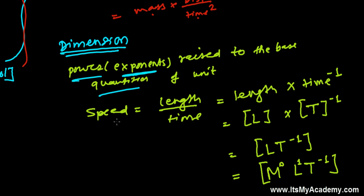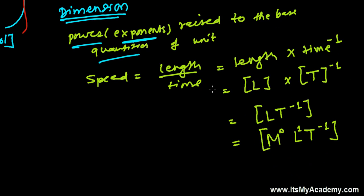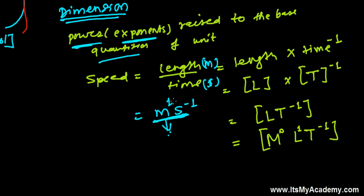So the dimensions of speed are: 0 in mass, 1 in length, and minus 1 in time. The unit of speed is meters per second — meter represents length with power 1, and second represents time with power minus 1. Those powers — 1 and minus 1 — are the dimensions of speed.